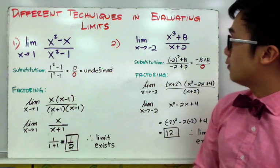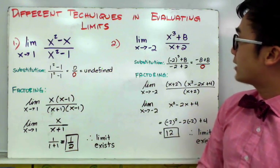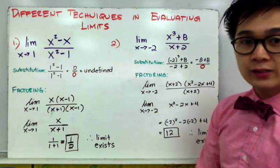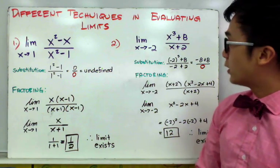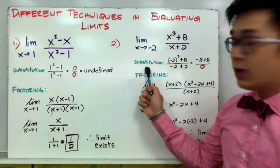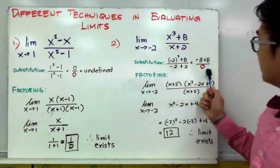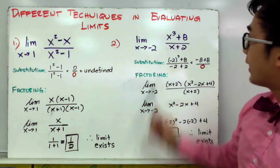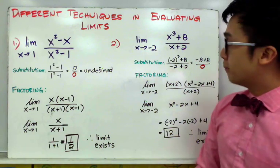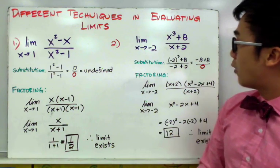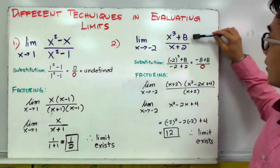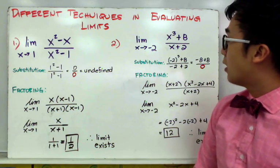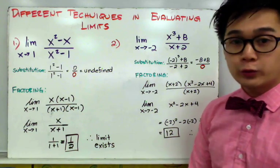For example 2, we have the limit of x cubed plus 8 all over x plus 2, as x approaches negative 2. By the substitution method, the denominator turns into 0, making the function undefined. By factoring, however, we can factor the numerator using the sum of two cubes.